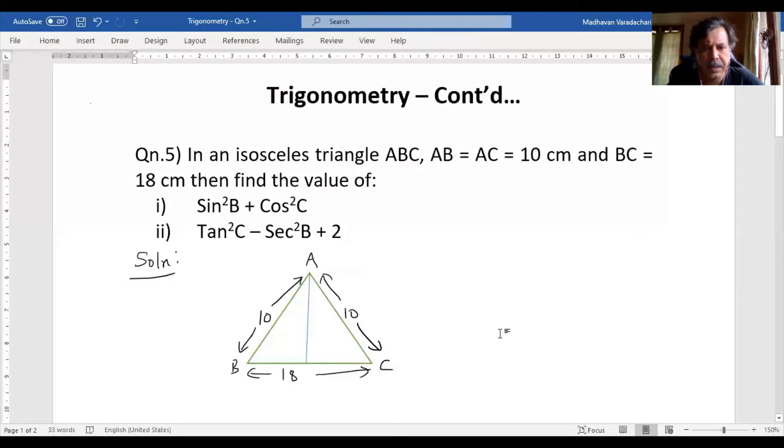Now I think it will be clear and we will call this, since it is perpendicular, this will be of 90 degrees, both sides. Let us call this as point D.